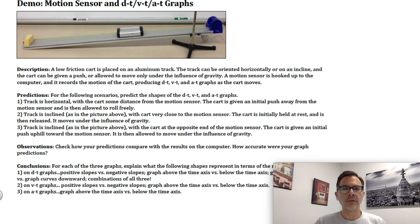Let's take a look at the assignment page. Okay, so here we are in the course pack. You can see the assignment is called Demo: Motion Sensor and d-t, v-t, a-t Graphs. The picture gives you an idea of what our setup is going to look like. We've got a track like this, a low friction but not zero friction cart, a motion sensor at one end which is hooked up to the computer and can generate those graphs, and we can raise or lower either end of the track.